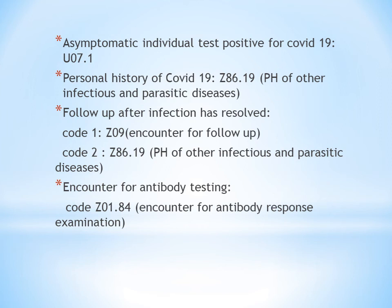Next is follow-up after the infection has resolved. When should you give the follow-up code? If the patient was once infected with COVID-19, it is resolved, and the patient now comes for a follow-up visit, the first code will be Z09 for encounter for follow-up, and the second code should be the personal history code Z86.19.